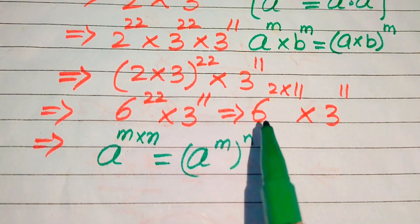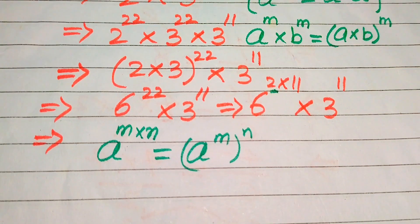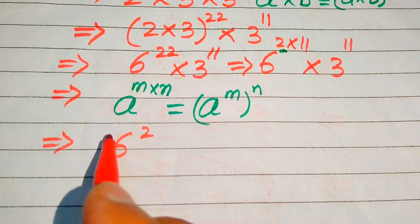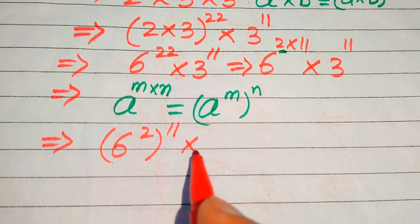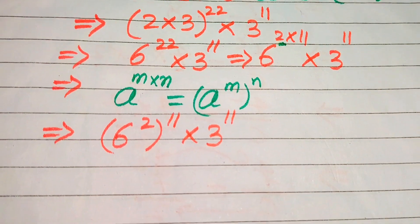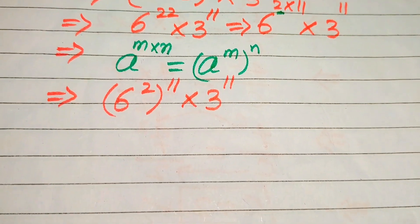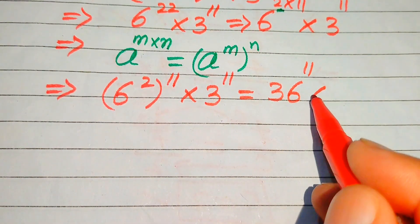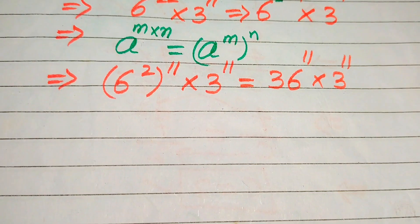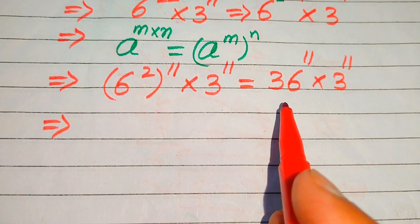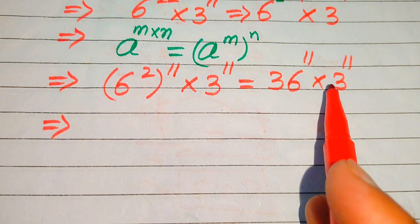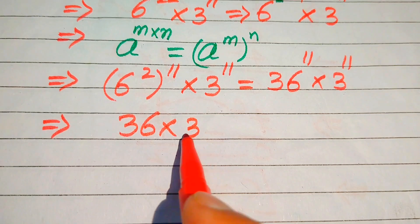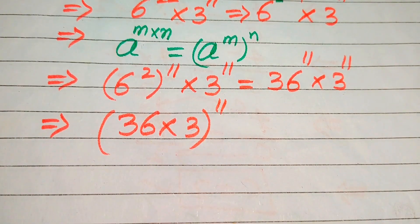According to this exponent law, we move the 2 inside the term, giving us (6 squared) to the power of 11, multiplied by 3 to the power of 11. Now 6 squared becomes 36, so we have 36 to the power of 11 multiplied by 3 to the power of 11. In the next step we again combine the exponents of these two terms, giving (36 multiplied by 3) to the power of 11.